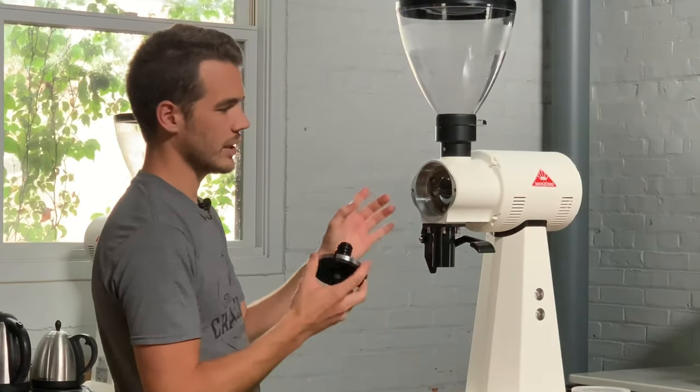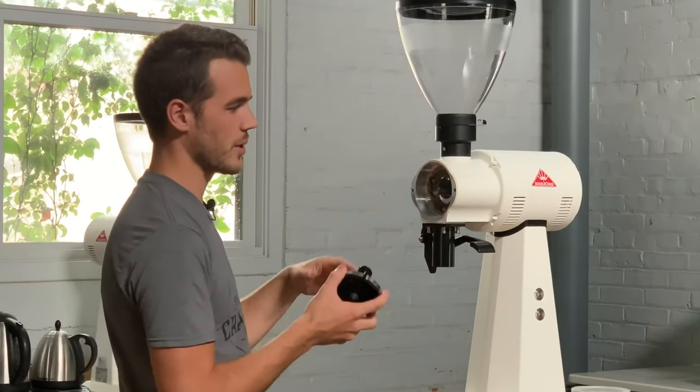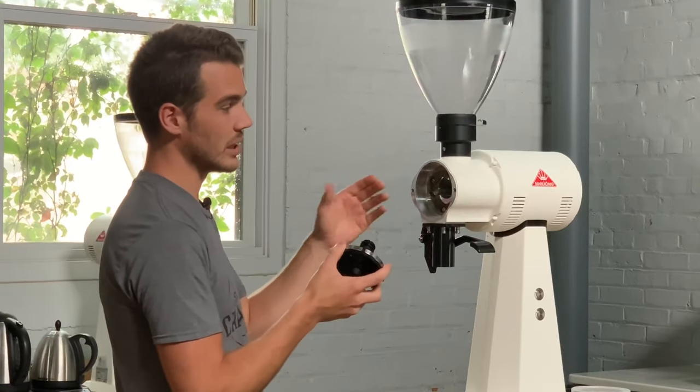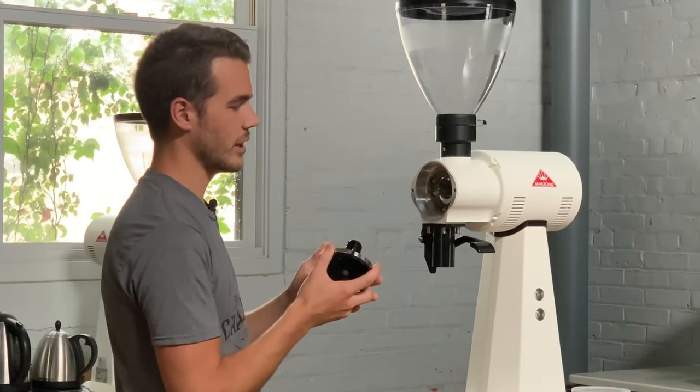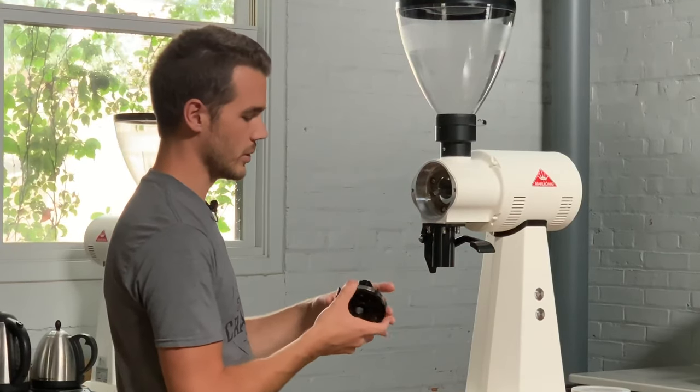You don't necessarily need to open this up for cleaning as a preventative item. It's mainly if you're experiencing a clog or something happens that you need to clean out the burrs. For preventive cleaning, you can just clean out the chute here. That's really all that you need to do.